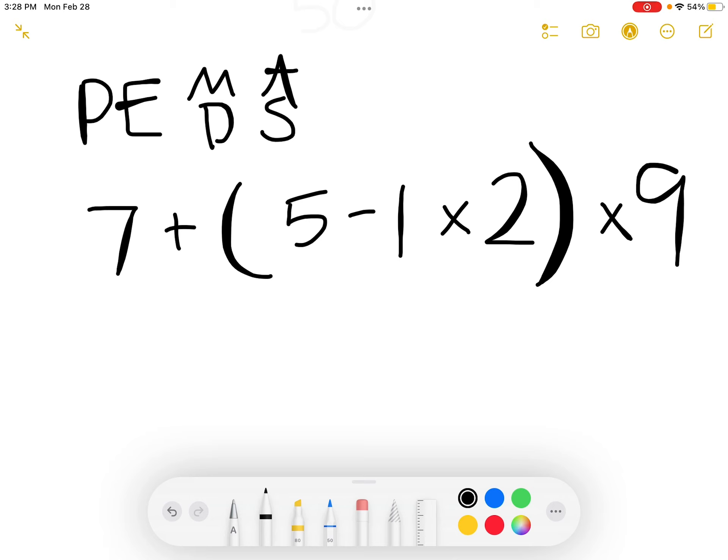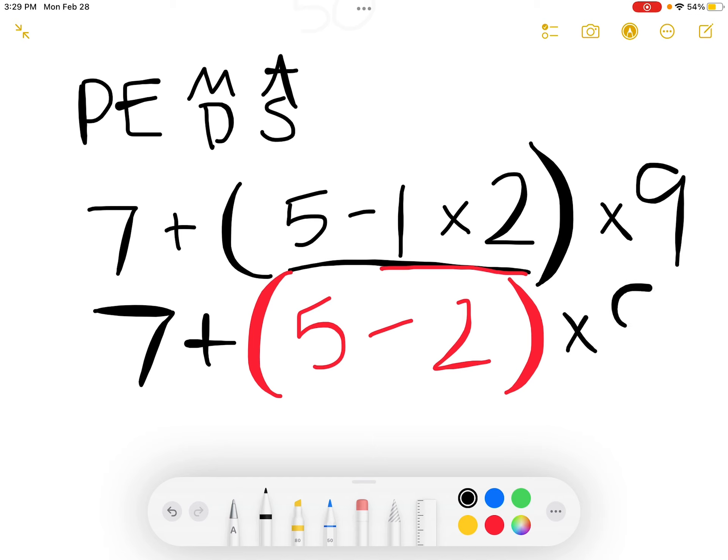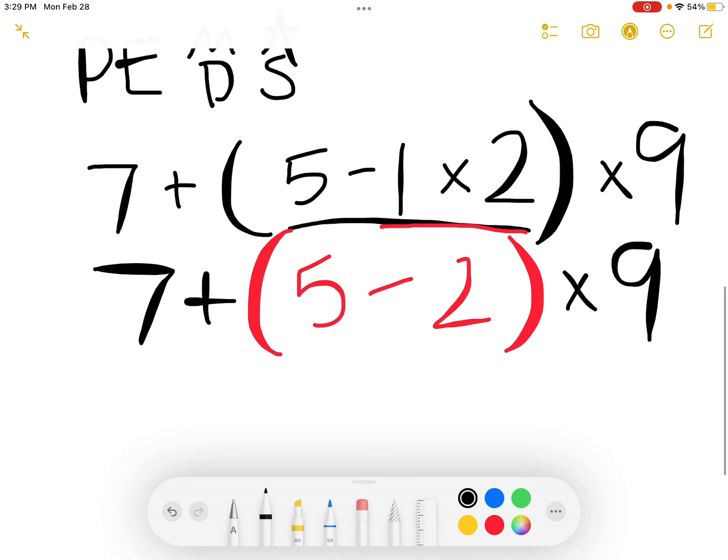The first thing we want to take care of here are our parentheses. But we want to follow the PEMDAS process inside the parentheses. So if I'm inside the parentheses, I have subtraction and multiplication. And I know multiplication comes before that addition and subtraction. So I take 1 times 2 to give us 2. And I still have that 5 minus inside of the parentheses. We cannot get rid of those parentheses until we get them down to one number. So you'll notice I kept the parentheses around the 5 minus 2. That means we still need to take care of those parentheses. So that is our next step, 5 minus 2, which gives us 3.